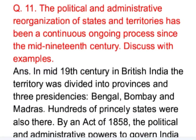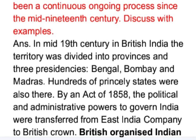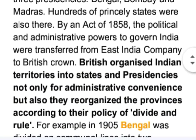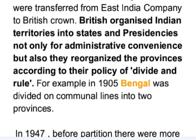In mid-19th century British India, the territory was divided into provinces and three presidencies — Bengal, Bombay, and Madras — and hundreds of princely states. By the Act of 1858, political and administrative powers to govern India were transferred from the East India Company to the British Crown. The British organized Indian territories not only for administrative convenience but also according to their policy of divide and rule. For example, in 1905, Bengal was divided on communal lines into two provinces.